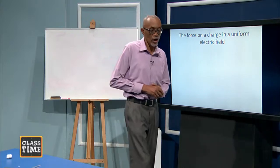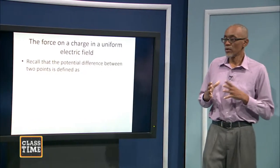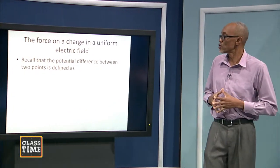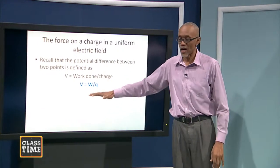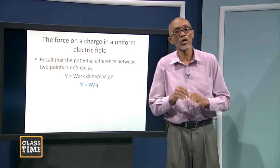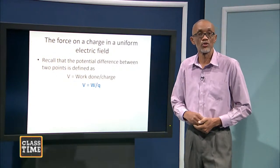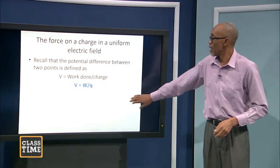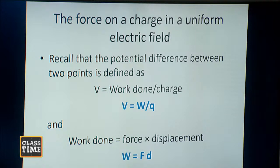We're going to look at the force on a charge in the electric field — in a uniform electric field. Recall that the potential difference between two points is defined as work done over charge: potential difference is work done per unit charge. That was something you should know. Also, the work done is equal to force times displacement — those two things you are expected to know.